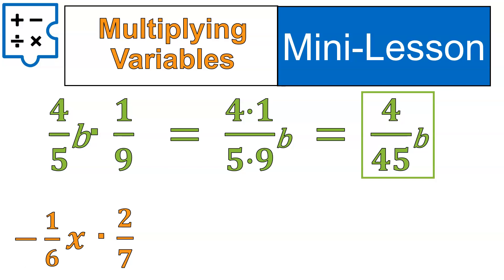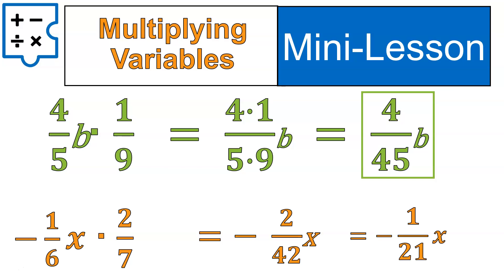Next: negative one-sixth x times two over seven. It's a negative times a positive, so the final answer will be negative. Multiplying directly: one times two is two, six times seven is 42, giving negative two over 42 x. I skipped that middle step — just multiplied numerator times numerator, denominator times denominator. That also gives us space to simplify this fraction into lowest terms.